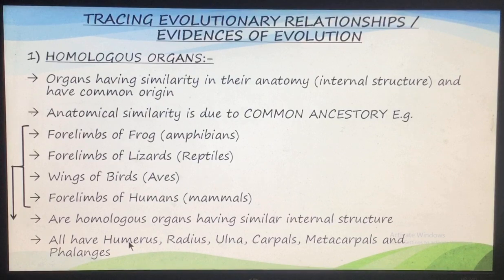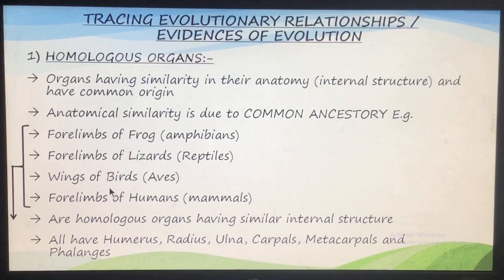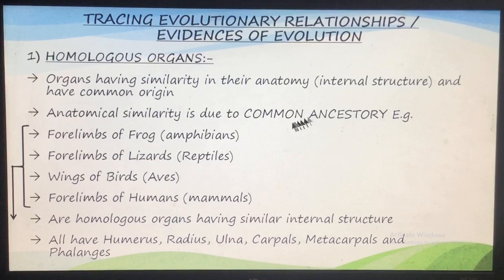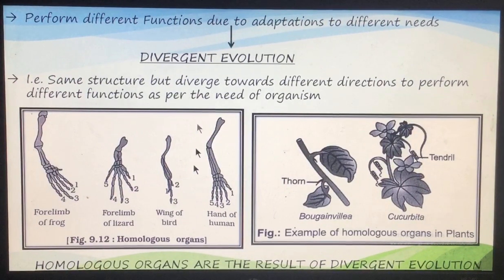All four limbs of all these animals have one humerus; below the humerus there is a radius, there is an ulna, there are carpals, there are metacarpals, and the phalanges are there. So the internal structure is the same but their function is different. The four limbs of lizard are used for crawling, the wings of birds are modified four limbs used for flying, and four limbs of humans are used for doing various works. These homologous organs show that organisms have a common ancestry - they must have evolved from common ancestors - and these homologous organs show divergent evolution.